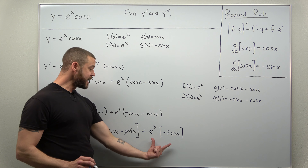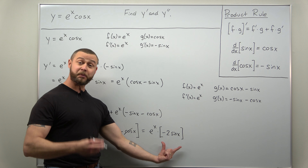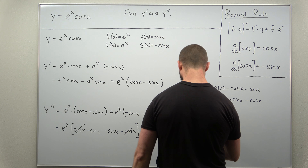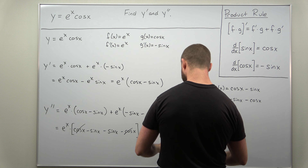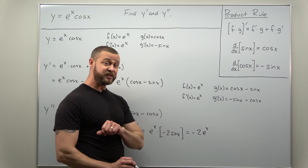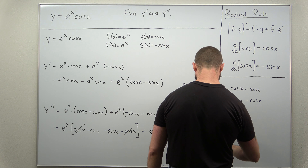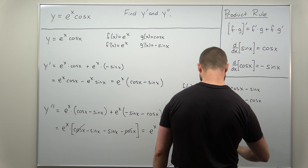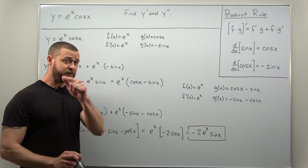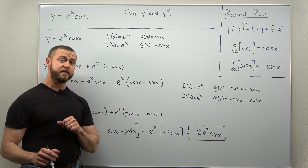So we have our exponential factor out front, and inside the parentheses we get negative 2 times sine of x. It's not wrong to leave your answer like this, but it's more standard to rewrite it without the extra parentheses. We'll switch the order of multiplication and bring the negative 2 out front, writing this as negative 2 times e to the x times sine of x. And that's a nice clean simplified answer for our second derivative.